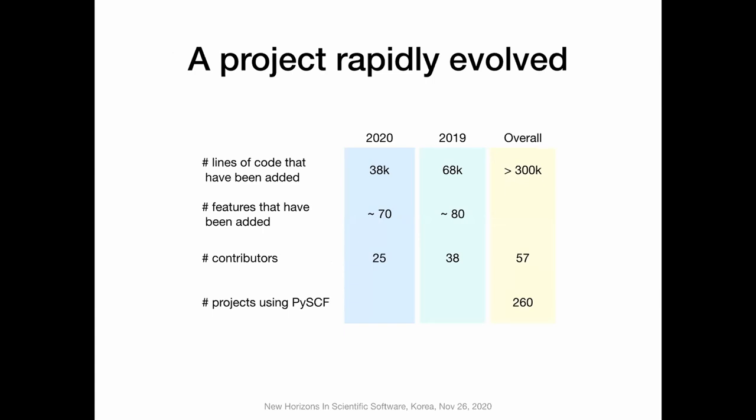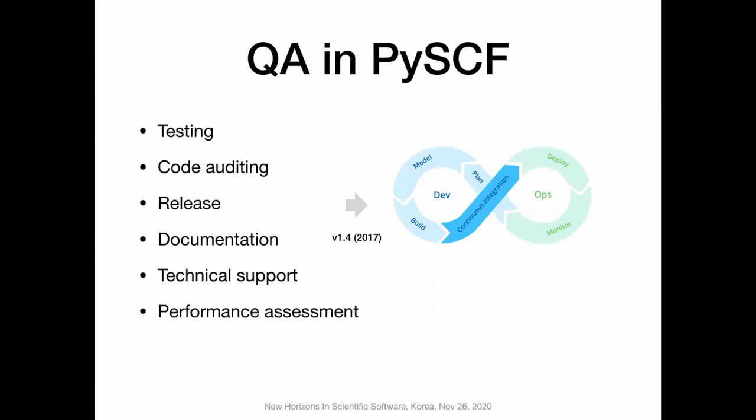In the last year, we actually had about 40k lines added to the code, more than 70 features added, and many contributors involved. This package is now used by about 260 projects. So obviously it's very important to ensure that whenever we add new features or improve existing code, the code quality does not become worse. The major transition happened in version 1.4 around 2017.